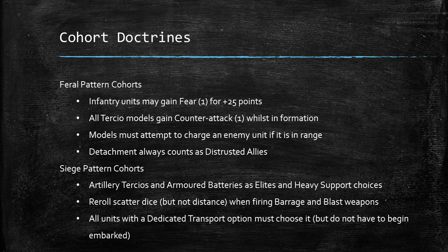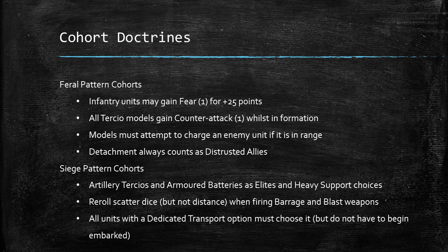Siege Pattern Cohorts allow artillery tertios and armored batteries to go in your elite slots as well as heavy support, which is quite powerful. You get to re-roll your scatter dice — but not the scatter distance — when firing barrage or blast weapons, and all units with a dedicated transport option must take one, though they don't have to start in it. The re-roll on scatter with blast weapons is really good, but unfortunately the artillery units in this book aren't very powerful, so it's better suited to narrative games where you want to build a themed siege regiment.